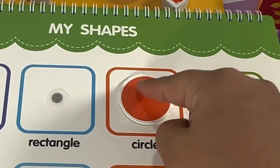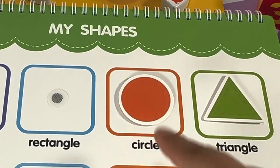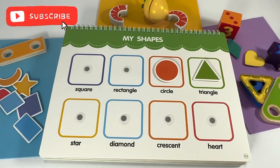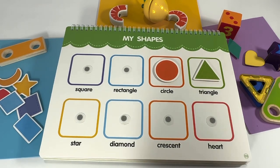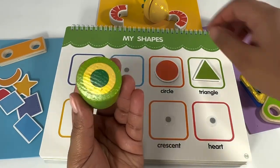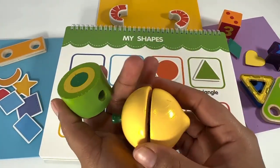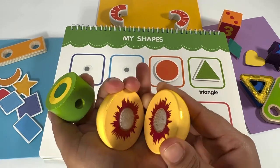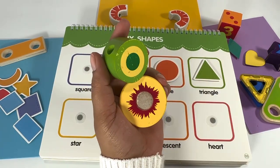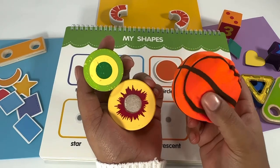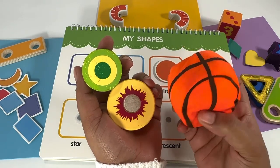Circle right here! Can you find any shapes at home that look like a circle? This is what I found — a passion fruit, and when you cut it in half it looks even more like a circle. A ball also looks like a circle.